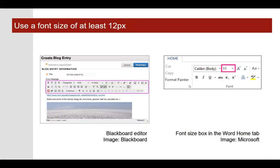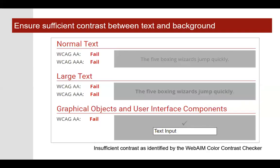When working with text, avoid small font sizes. We like to use a font size of at least 12. This slide includes screenshots of the Blackboard editor and the font size box in the Microsoft Word Home tab. You should also ensure sufficient contrast between the text in the foreground and the background color of the page or document. Text is much easier to read when there is sufficient contrast between the foreground text color and the background color.